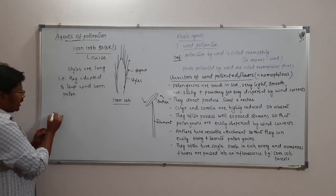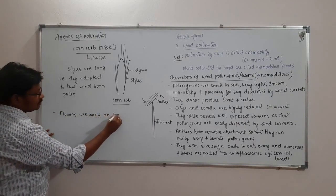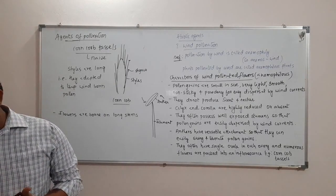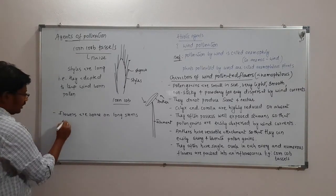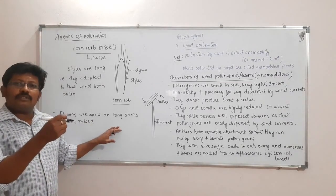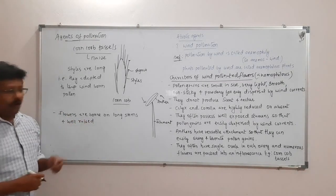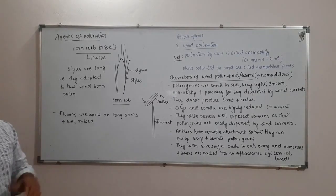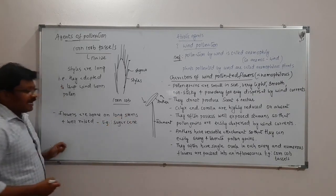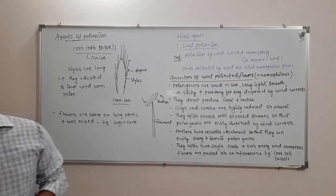Another character is that the flowers are born on long stems and are well raised. The long stems help them to be exposed into the air. This is seen in the case of sugarcane, which produces such inflorescences.